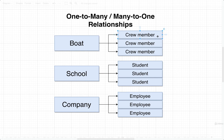Looking at the opposite direction, we would say that a crew member has one boat — a crew member is only stationed on one boat at a time. Likewise, a student in general just belongs to one school; we'll generalize and say a student has one school, enrolled in only one single school at a time. Similarly, while someone might have multiple jobs, we can generalize and say that an employee has one company — they are employed by a single company at a time. So from left to right it's one-to-many, one-to-many, one-to-many, and going from right to left it's many-to-one, many-to-one, many-to-one.